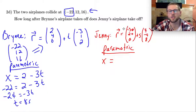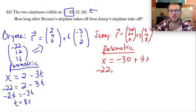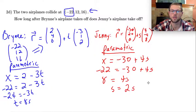The x position for Jenny's airplane is given as negative 30 plus 4s. Once again, I want to find out when that x position is negative 22. So I'll set this equation equal to negative 22 and solve for s. I'll add 30 to both sides, I get positive 8 equals 4s, so s equals 2 seconds.